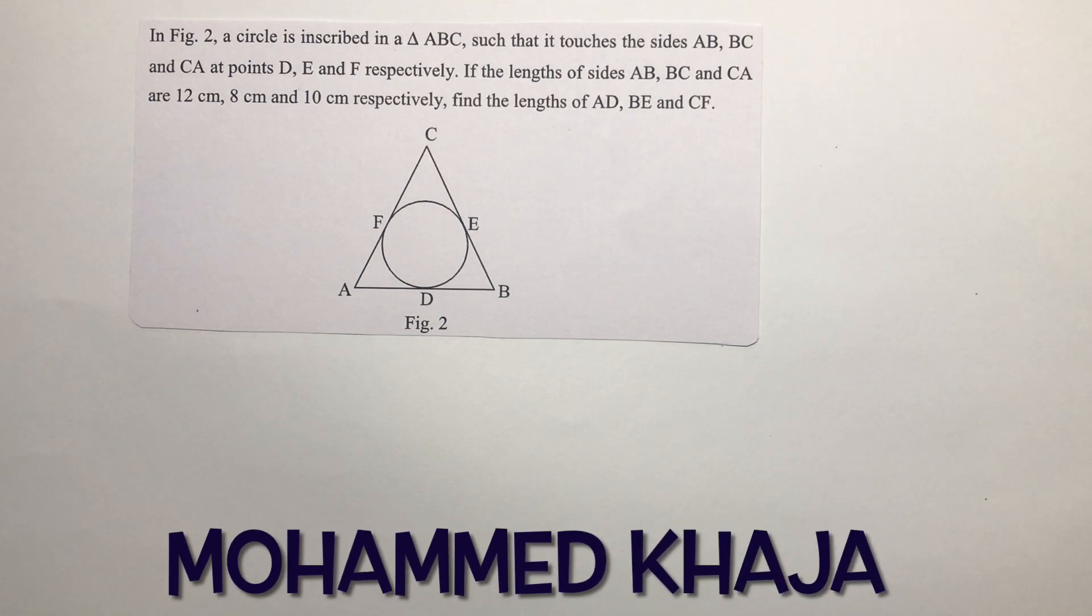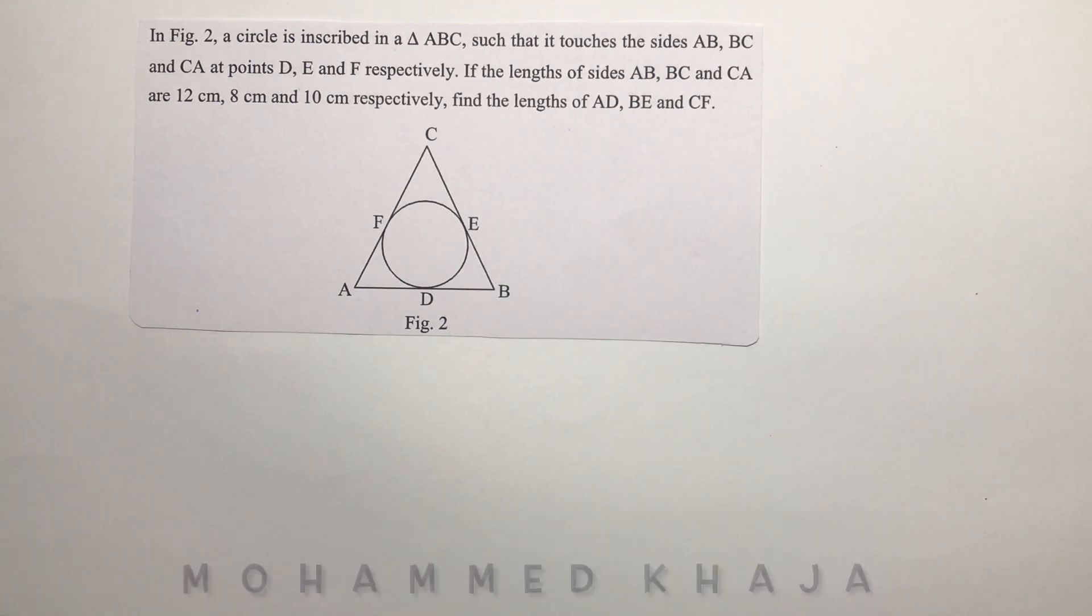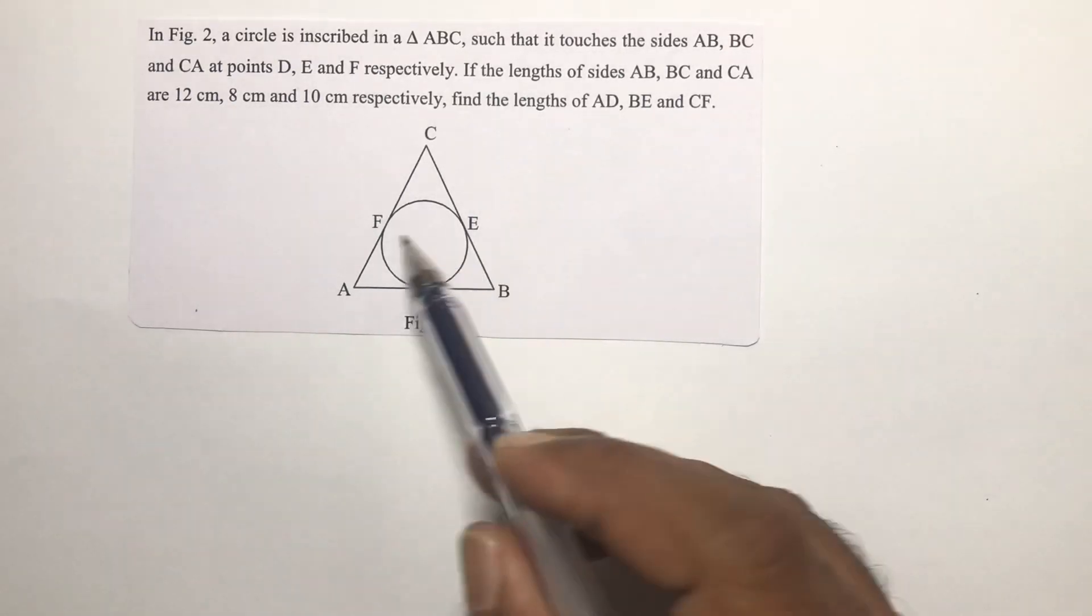In figure 2, a circle is inscribed in a triangle ABC such that it touches the sides AB, BC and CA at points D, E, F respectively.